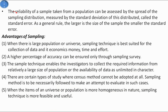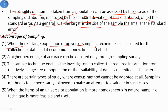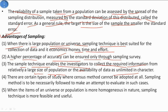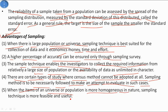The reliability of a sample taken from a population can be assessed by the spread of the sampling distribution, measured by the standard deviation — called the standard error. As a general rule, the larger the size of the sample, the smaller the standard error. Advantages of sampling include: it is best suited for large populations; it is economical in terms of money, time, and effort; it ensures a higher percentage of accuracy; it enables the investigator to collect information from a relatively large population; and when items of a population are homogeneous in nature, sampling is more feasible and useful.